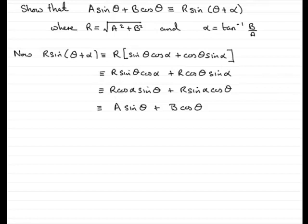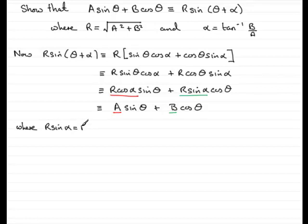Now the question is, we need to figure out what r and α are. To do that, I compare the coefficients of sin θ: we see that r cos α is identical to a. And comparing the coefficients of cos θ, we see that r sin α equals b. So we write: r sin α = b (equation 1), and r cos α = a (equation 2).